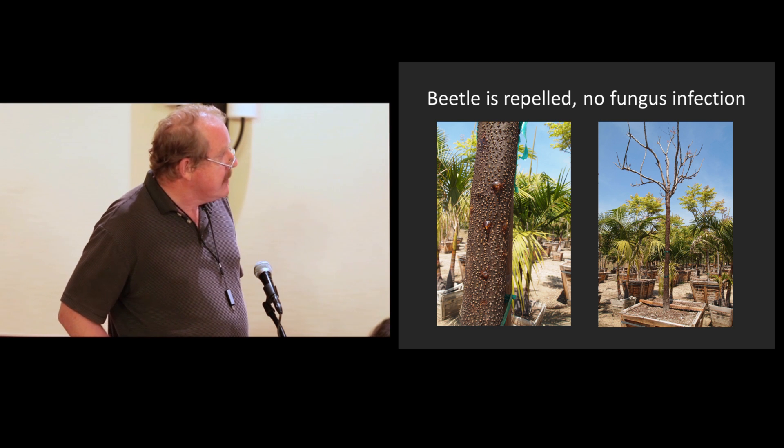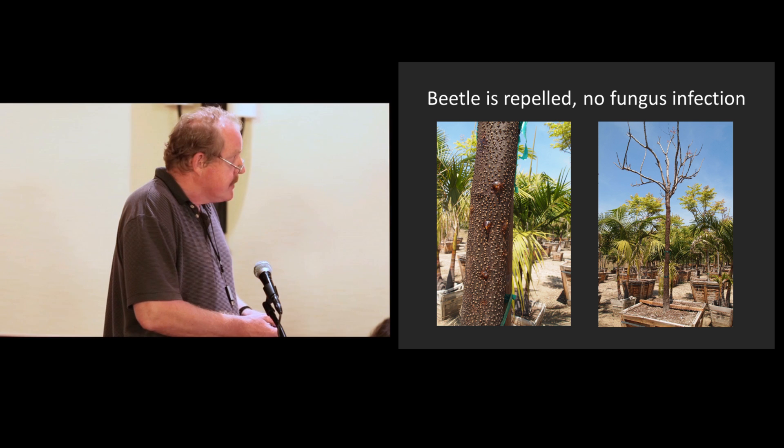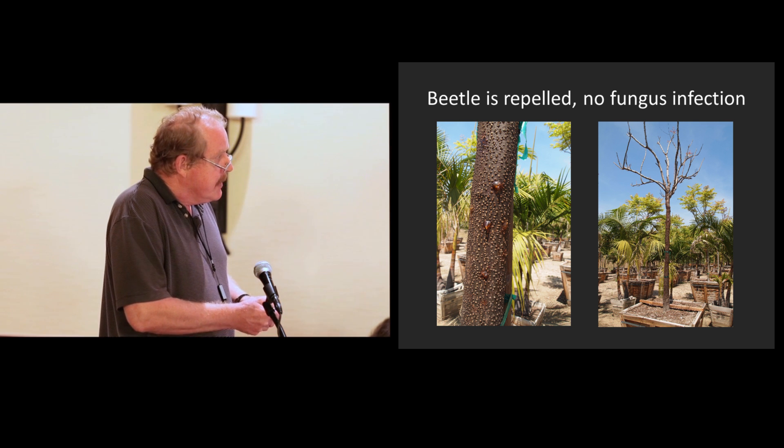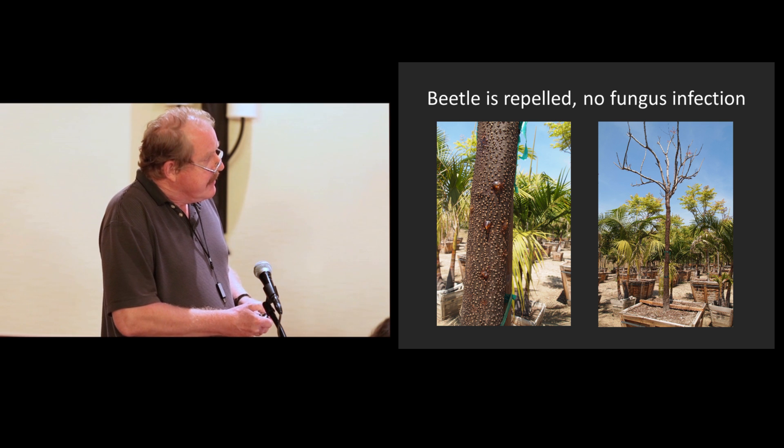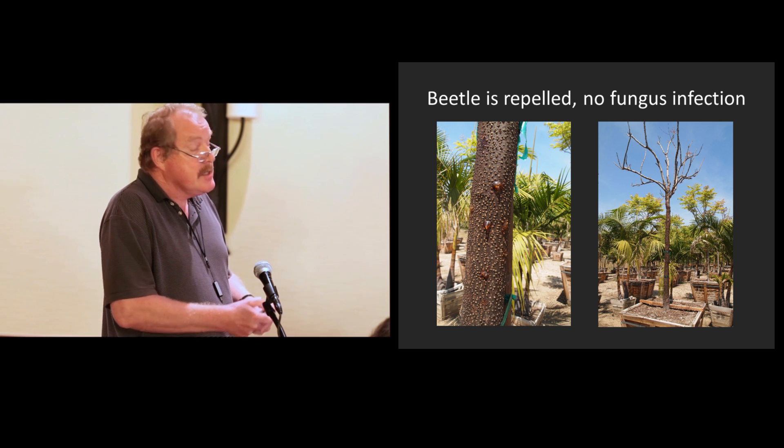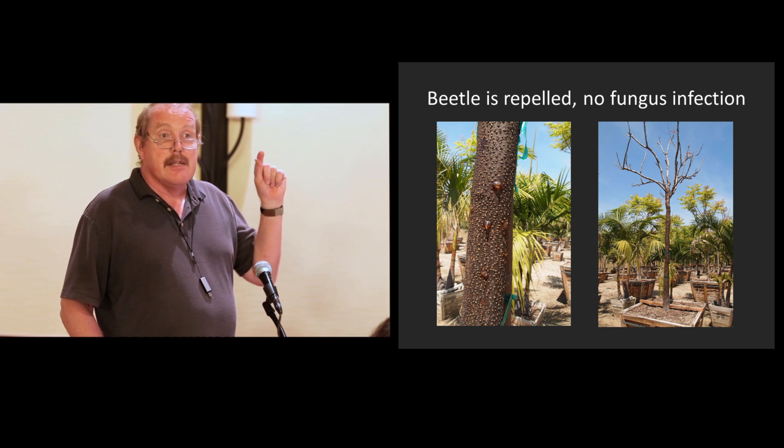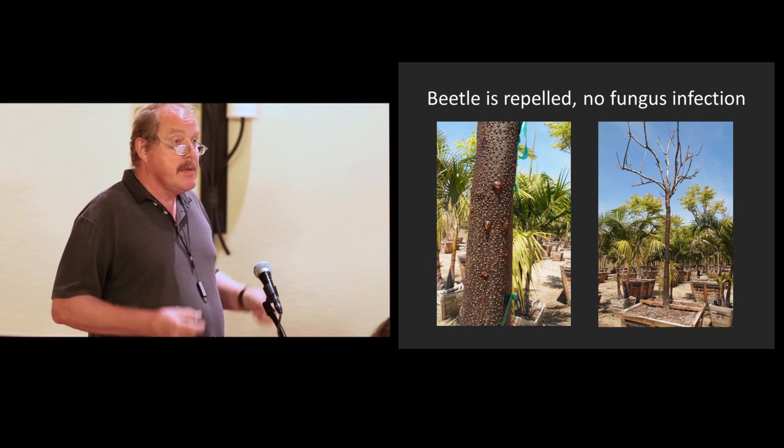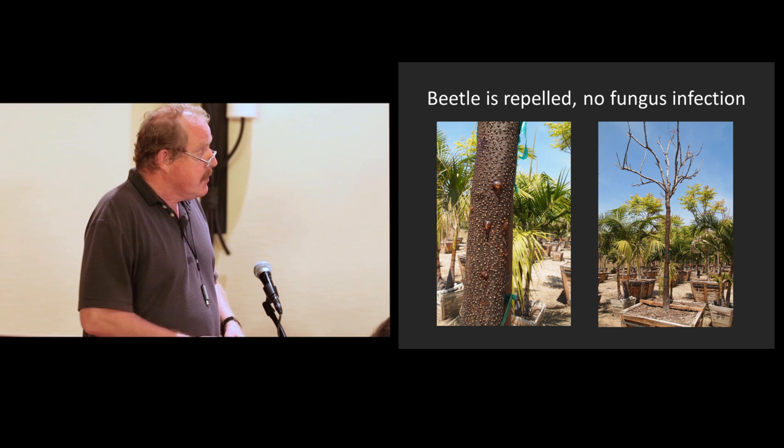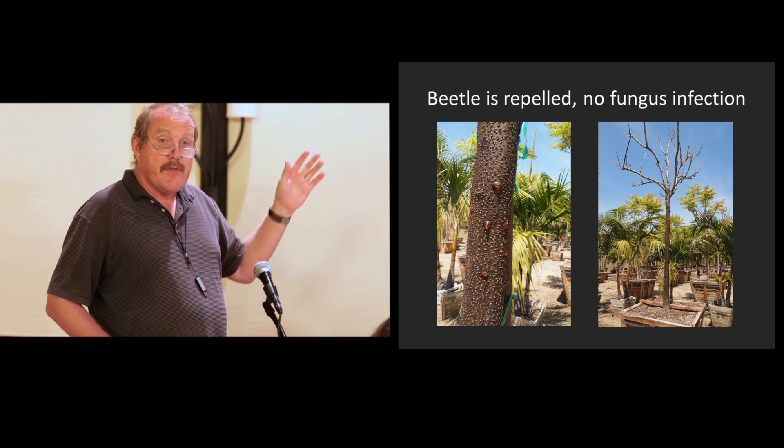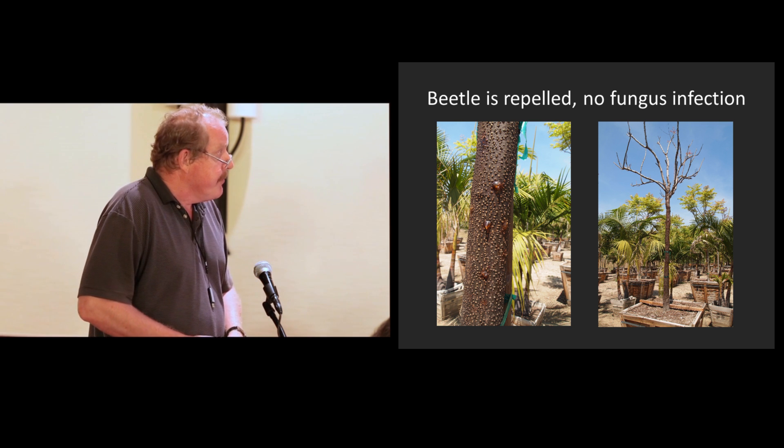Here you have a case where the beetle is repelled. And it's repelled because the tree produces this gum. And so the fungus doesn't get in. Yet, the tree ends up dying because it starts to leak so much. So the effort of producing all this gum is probably such that the tree still goes down. In other cases, the tree survives fine, as far as we can tell now. And it's not a problem.